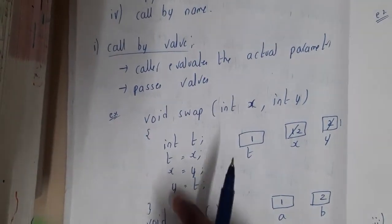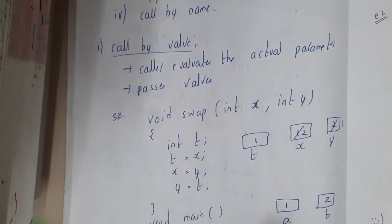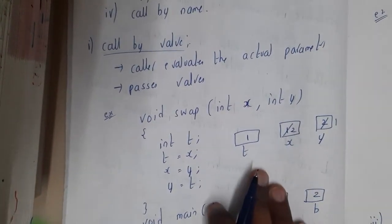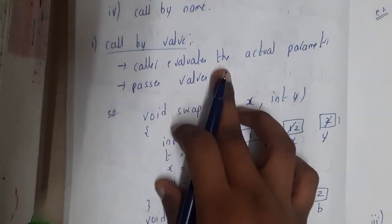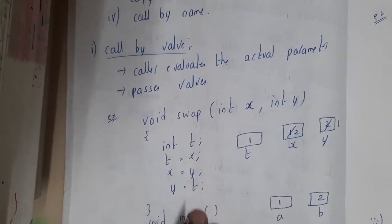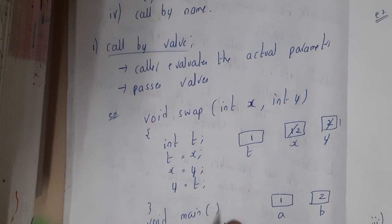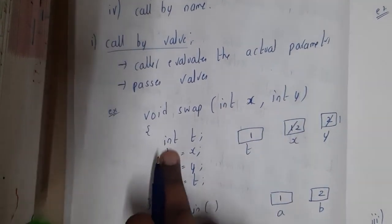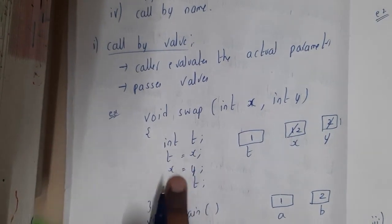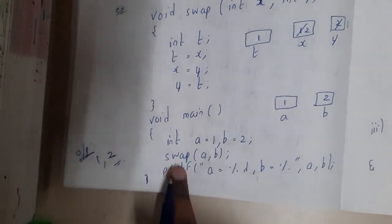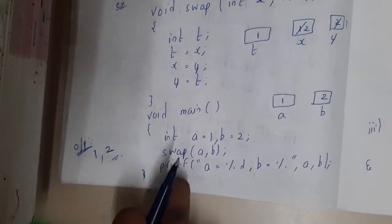Call by value — from the name itself it is clear that you will be calling with the help of values. You pass the values and assume they are going to change, but they won't affect the original. For example: void swap(int x, int y) { int t = x; x = y; y = t; } and in void main: int a = 1, b = 2; swap(a, b); print(a, b).